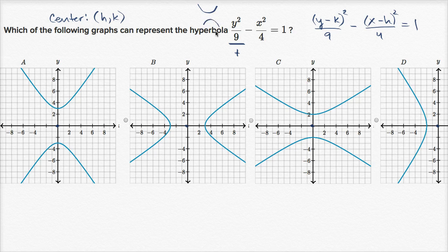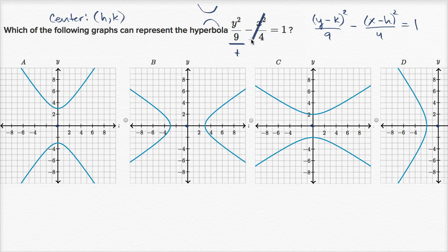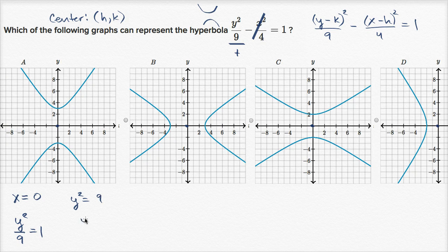You could just memorize that, but it's more satisfying to understand why. If the y term is positive, you can set the x term equal to zero by making x equal to the x-coordinate of the center, which is zero. Then you solve: y squared over nine equals one, so y squared equals nine, and y equals plus or minus three. So the points (0, +3) and (0, −3) are on the hyperbola, which confirms it opens upward and downward.